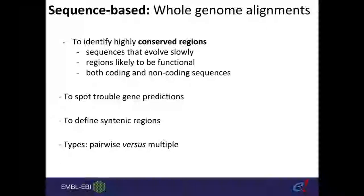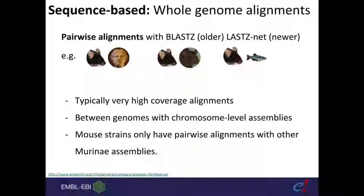Whole genome alignments identify highly conserved regions and are useful for both coding and non-coding sequences, spotting problematic gene predictions, and defining syntenic regions. There are two types: pairwise and multiple. Pairwise alignments use the LASTZ pipeline and are typically high-coverage alignments between two assemblies, usually only for chromosome-level assemblies. Mouse strains only have pairwise alignments with other Muridae assemblies — including all mouse strains, the reference, rat, and Algerian mouse — so it is not possible to compare directly to human; you would use the mouse reference as an intermediary.